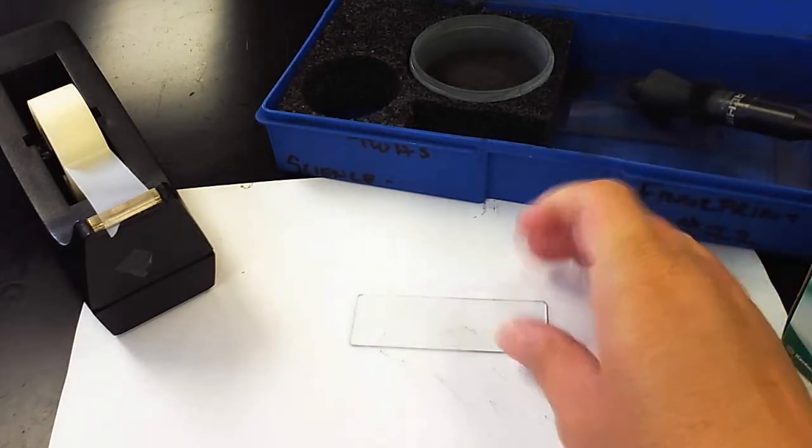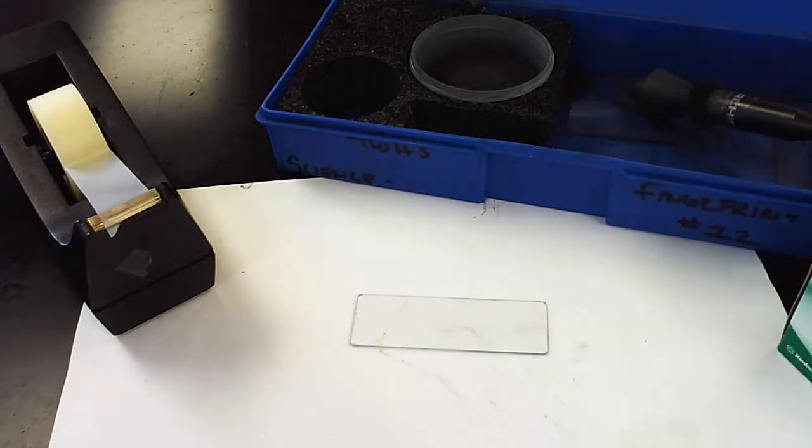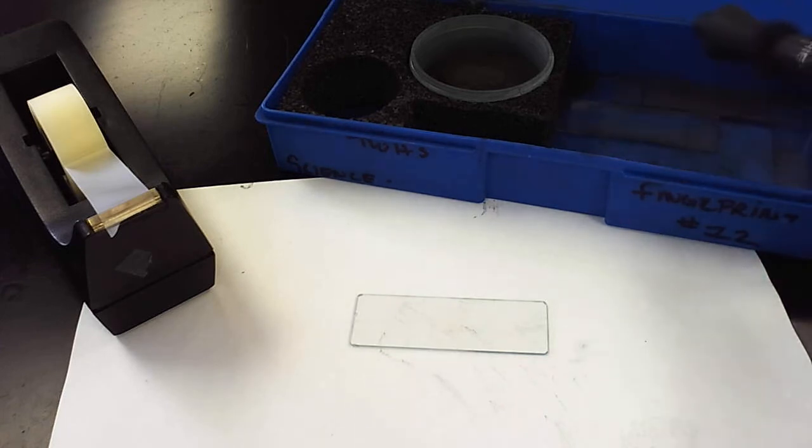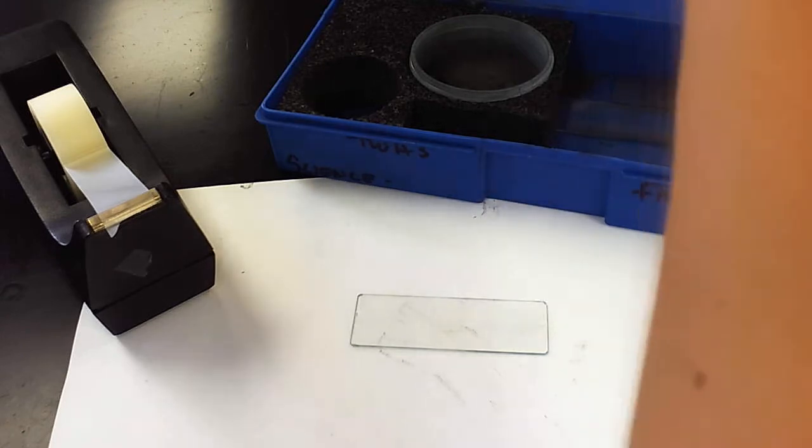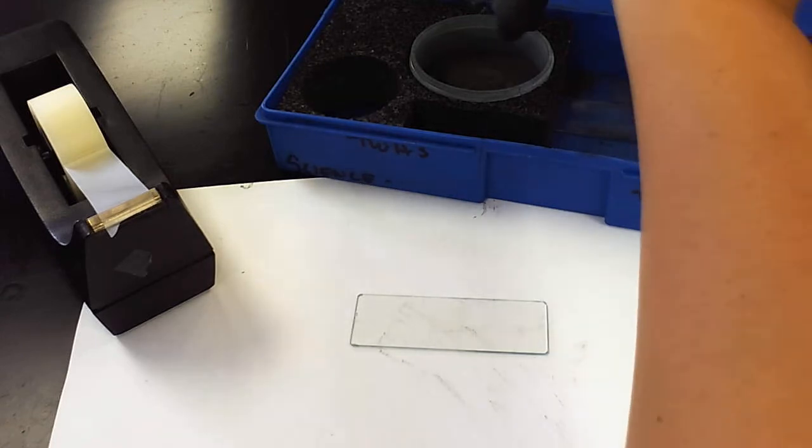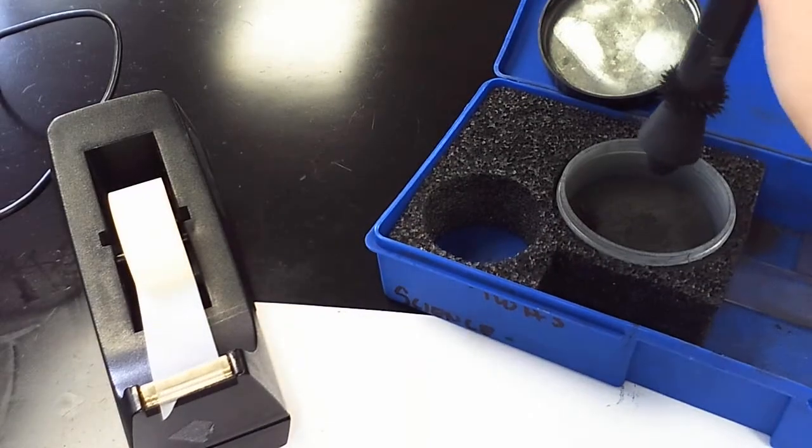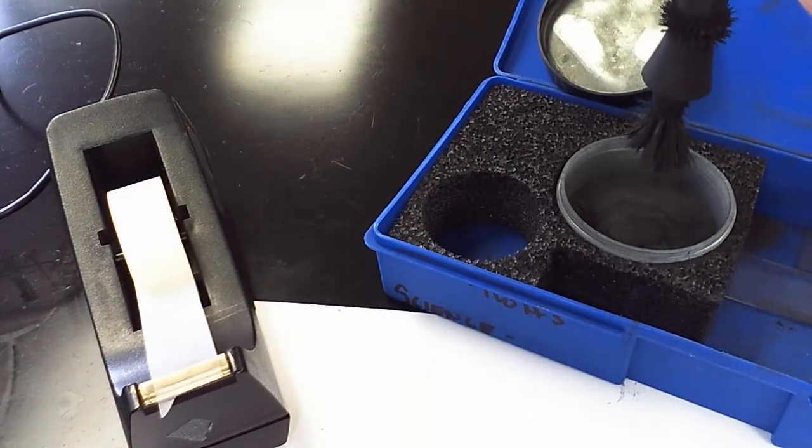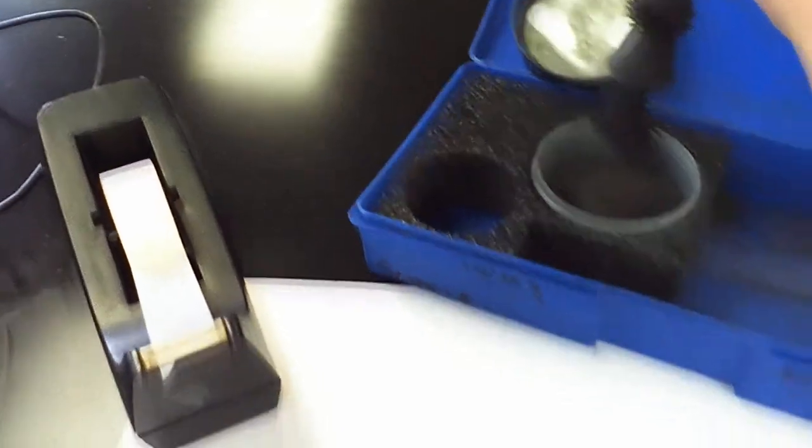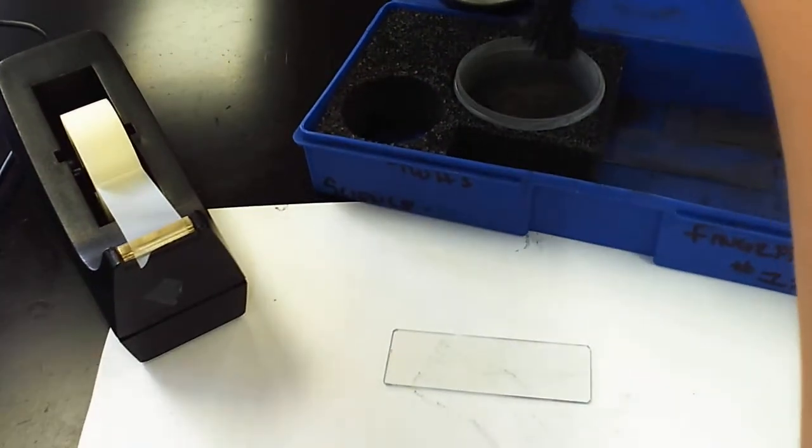So what we want to do is we actually want to lift that fingerprint off of the glass slide. And so to do that, this is where you want to practice, because this takes some technique and some ability. So this wand, you actually want to hover above the magnetic powder. When I hover it, you'll see it actually picks up the powder and becomes like a paint brush.